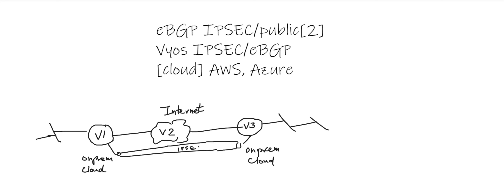A note on why we emphasize IPSec: AWS supports GRE, and for routing to work you need some kind of tunneling mechanism. GRE is one option, but Azure does not support GRE - Azure only supports IPSec. So IPSec is common between both AWS and Azure.